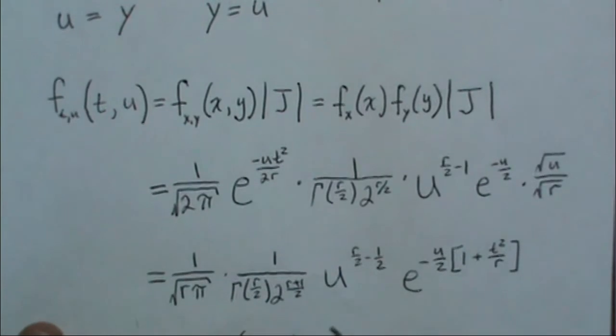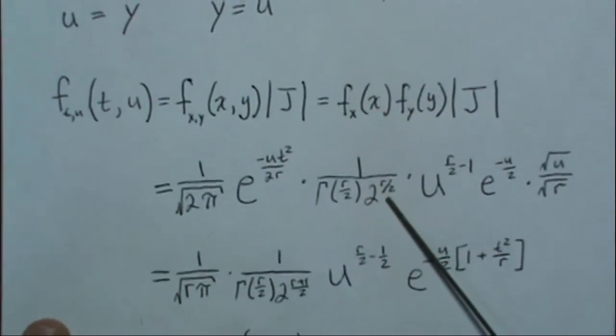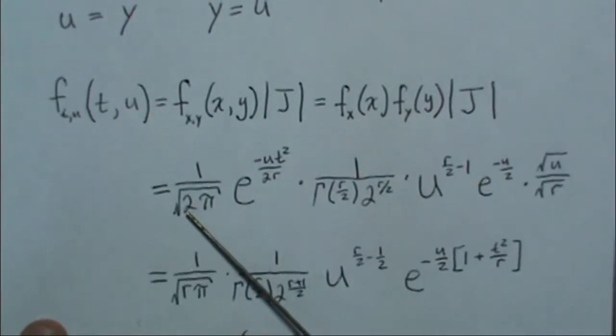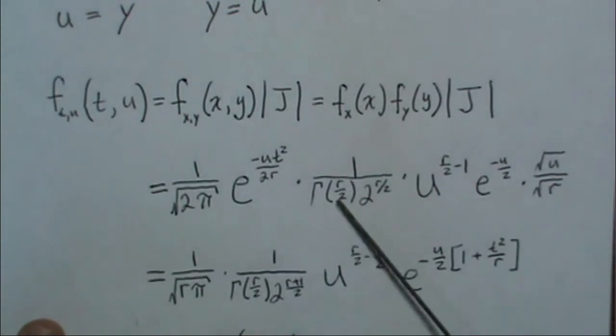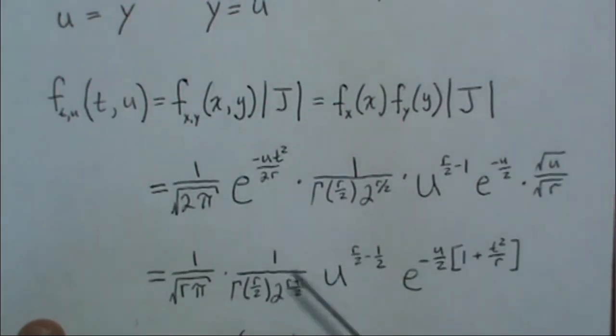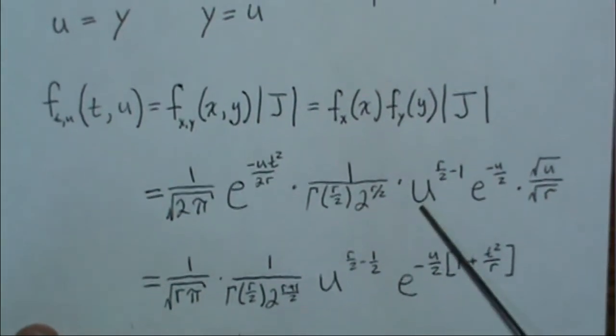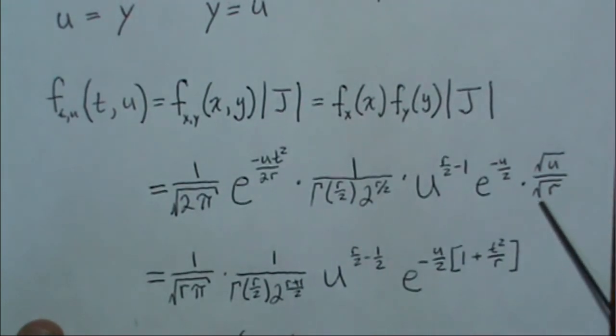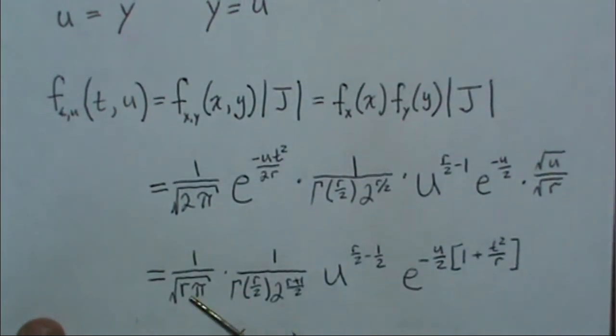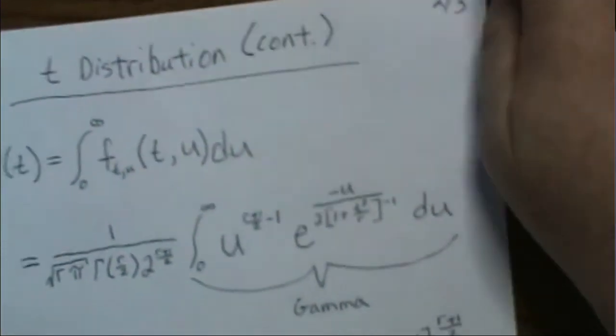We simplify, so this 2, r over, raised to the r plus 2, is combined with this 2 raised to the 1 half. The gamma comes down. These e's are combined, and this u is combined with this u to the 1 half. And the square root of r is combined with pi.